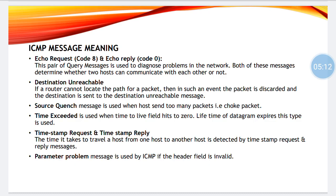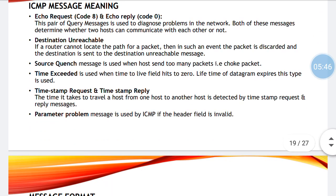Destination unreachable means the packet has lost the destination address, and hence the packet has to be discarded and sent once again. Source quench message is used when the host sends too many packets that the receiver is unable to handle. Time exceeded means when TTL has become zero, the packet has to be discarded and sent once again. Timestamp request and timestamp reply detect the time it takes to travel from one host to another. Parameter problem message is used by ICMP if the header field is invalid.